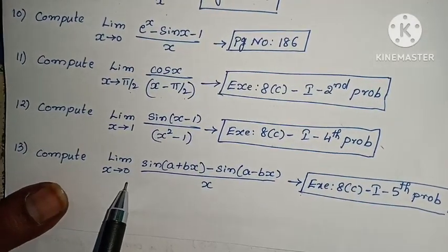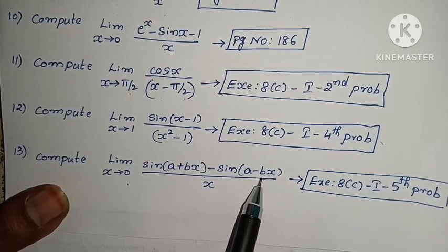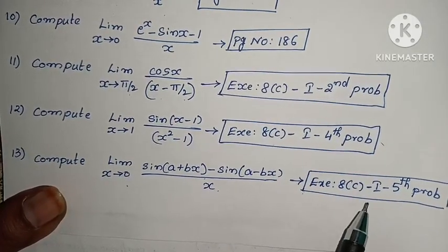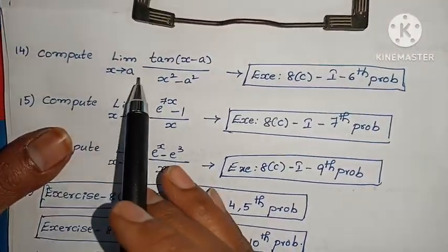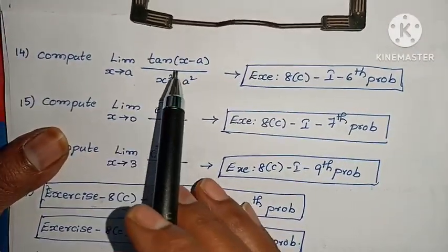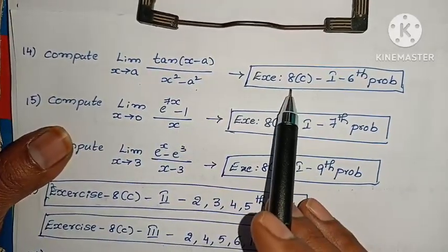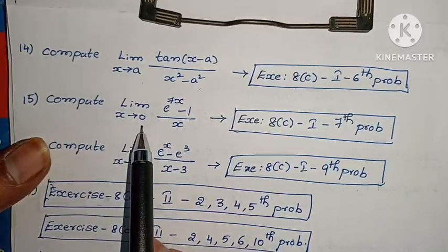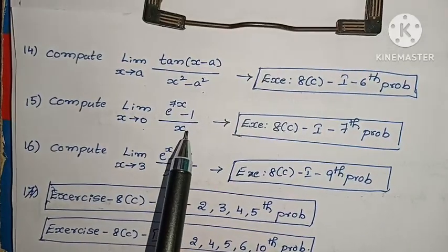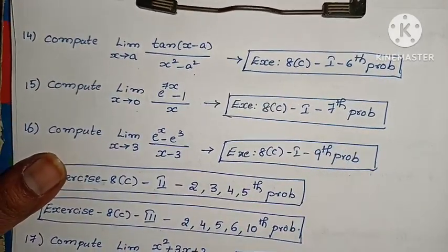Next, compute limit x tends to 0, sin(a plus bx) minus sin(a minus bx) by x — C, first Roman, 5th problem. Next, compute limit x tends to a, tan(x minus a) by x squared minus a squared — C, first Roman, 6th problem. Next, compute limit x tends to 0, e to the power 7x minus 1 by x — C, first Roman, 7th problem.